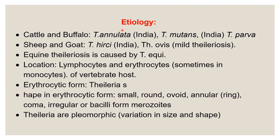Regarding etiology: in cattle and buffaloes, the important Theileria species is Theileria annulata, most common in India. Theileria parva is also a species in cattle and buffaloes. In sheep and goats, Theileria hirci is commonly found in India; Theileria ovis causes a mild Theileriosis. In horses, the organism is Theileria equi, causing equine Theileriosis.